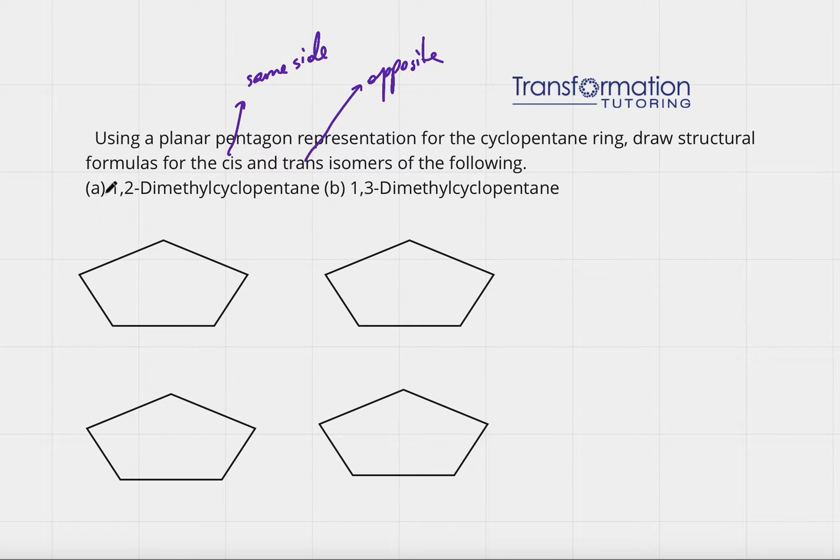Here we have 1,2-dimethylcyclopentane and we're asked to draw a planar pentagon which I have done already. If I number, let's say number this way, 1, 2, 3, 4, 5. 1,2-dimethyl means there is a methyl group on carbon 1 and there is a methyl group on number 2.